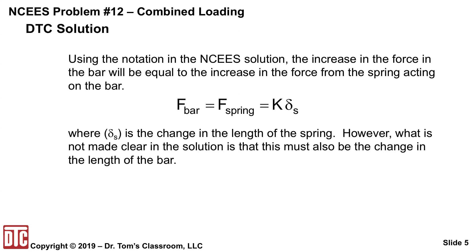If we use the notation in the NCEES solution, the increase in the force in the bar will be equal to the increase in the force from the spring acting on the bar. That's just Newton's third law. So what you have is F in the bar has got to equal F in the spring. The spring is K delta S, where delta S is the change in the length of the spring. However, what is not made clear in the solution is that this must also be the change in the length of the bar.